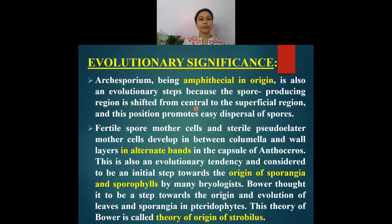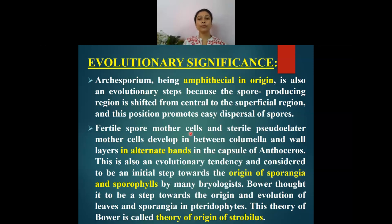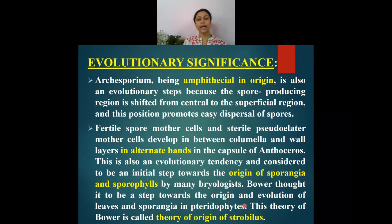Another unique character is the archesporium, which causes the spore-producing region to shift from the central to the superficial region of the sporogonium of Anthoceros, aiding in easy dispersal of spores. The presence of alternate bands of elators and fertile spore mother cells is also an evolutionarily important character, considered to be an initial step towards the origin of sporangia and sporophylls. Bower considered this to be a step towards the origin and evolution of leaves and sporangia in pteridophytes — this is known as Bower's theory of the origin of the strobilus.